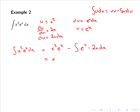Tidying this up, we have x squared e to the x minus 2 times the integral of x e to the x dx. So to calculate the integral of x squared e to the x, we must calculate the integral of x e to the x dx. However, from the last part we found that the integral of x e to the x was given by e to the x times (x minus 1) plus the arbitrary constant c.